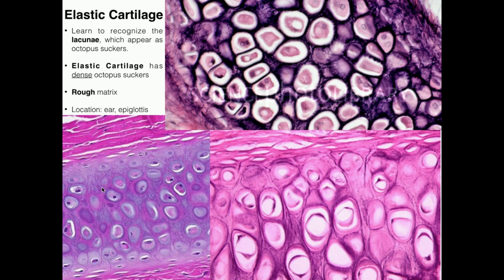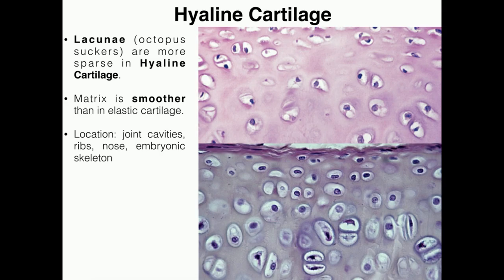In terms of location, we have elastic cartilage in both the ear and the epiglottis. We won't be looking at the epiglottis until anatomy and physiology two, but you can feel your ears and they are made of cartilage — the specific type is elastic. If you get confused, think E for elastic, E for ear, and epiglottis. The key with elastic cartilage is we have the lacunae with the chondrocytes, and the matrix is rough.